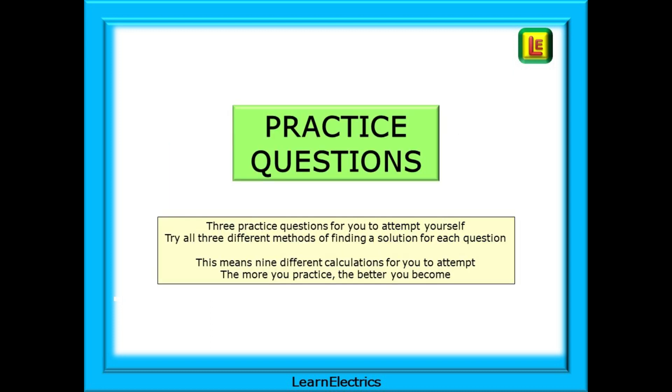OK, time for some practice questions to reinforce your understanding. There are three practice questions for you to attempt yourself, and there are three methods for each question. Try all three different methods of finding a solution for each question, before going on to the next slide with the answer. And these are the reciprocal method, the total current method, and the MAD method. Three questions, three ways. This means that there are nine different calculations for you to attempt, and the more that you practice, the better that you become.